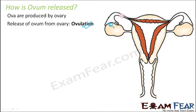Here you can see how the Graafian follicle would be. The Graafian follicle will rupture and the egg will get released. The egg will be received by these finger-like projections called fimbriae. These fimbriae will push the egg towards the fallopian tube, and that is how the egg gets released from the ovary into the fallopian tube. This release of ovum from the ovary is known as ovulation.